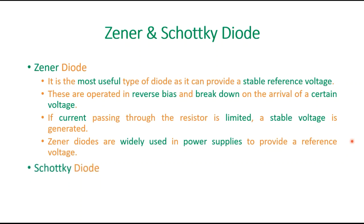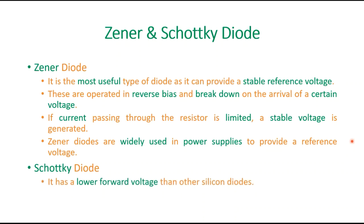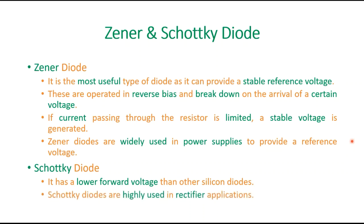The Schottky diode is based upon a lower forward voltage compared to other silicon diodes, and these are highly used in rectifier applications.